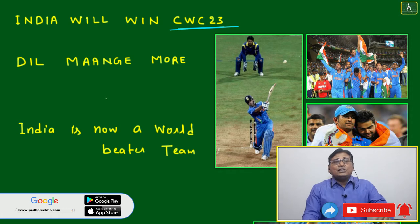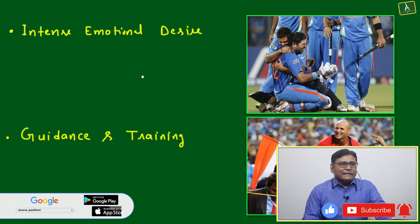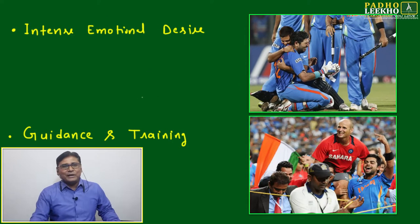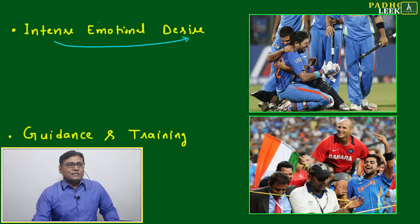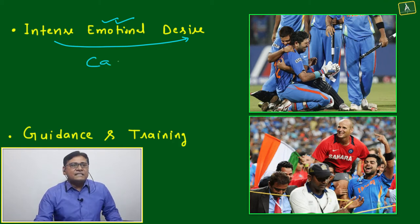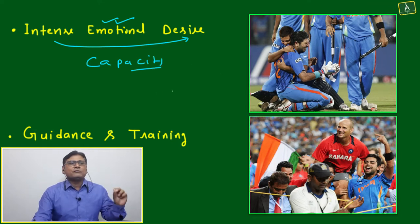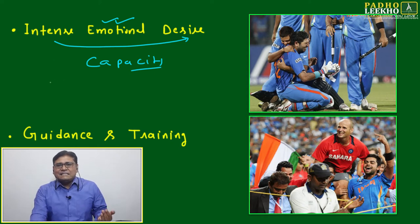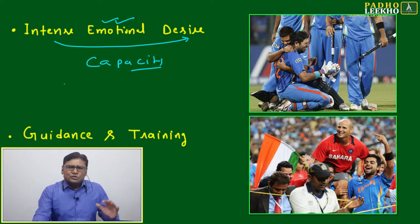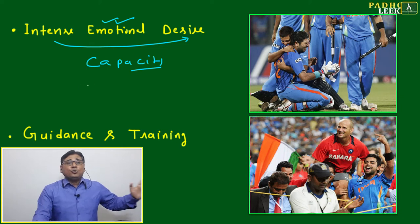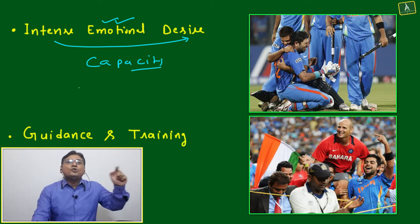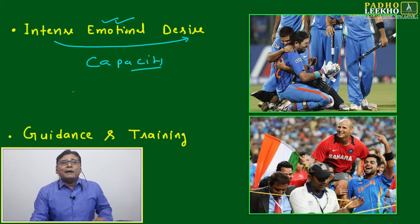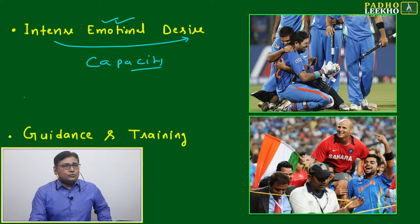The assumption is that whatever performance India has right now should continue till 2023. Now, what is the main ingredient of success? A few more images related to the Cricket World Cup 2011: intense desire, once blended with emotion, has the capacity to do anything — nothing is impossible. Many times people are not able to achieve because they focus more on what they don't want; we should focus on exactly what we want.